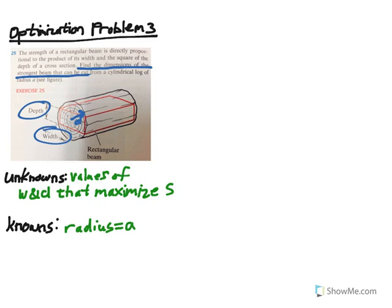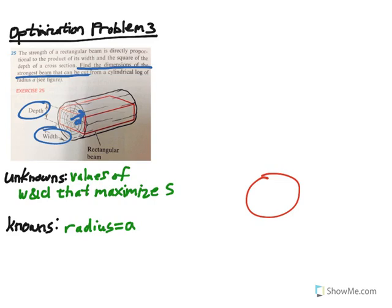Other knowns require a bit more imagination. If you look at a cross-section — in other words, if you look at this log head-on — you see a circle, and inside that circle is a rectangle inscribed inside the circle. The circle has radius A. Draw a radius to the corner of the rectangle, because that corner touches the perimeter of the circle.